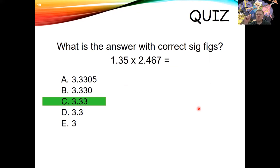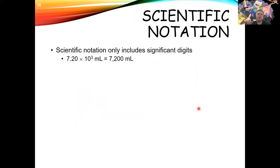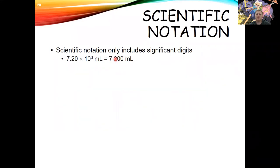There's ambiguity when trailing zeros may or may not be significant. That's where scientific notation helps. In scientific notation, we include only significant digits and multiply by a power of 10. For example, 7.20 × 10³ equals 7,200 — the exponent 3 means move the decimal three places to the right. If you just write 7200, you can only say there are two sig figs, but in scientific notation 7.20 × 10³ clearly shows three sig figs.